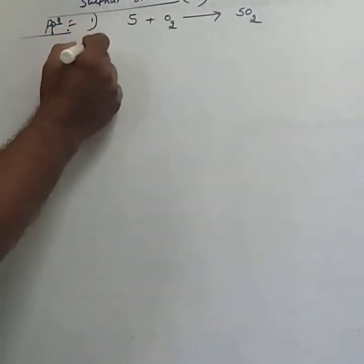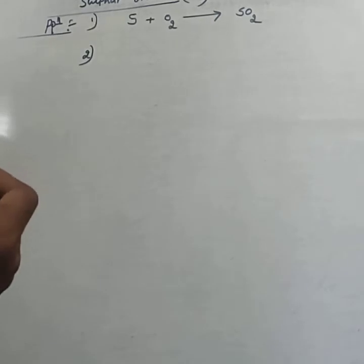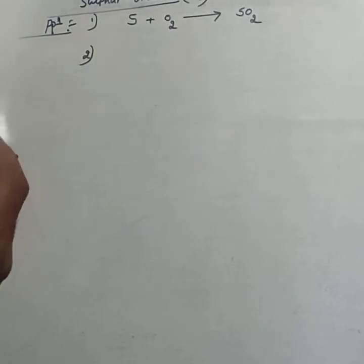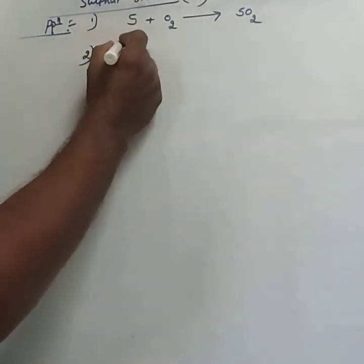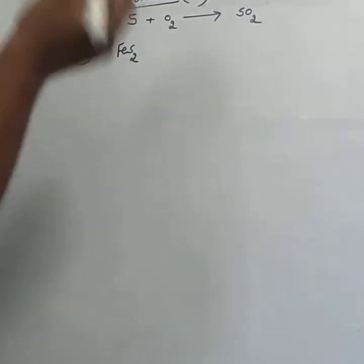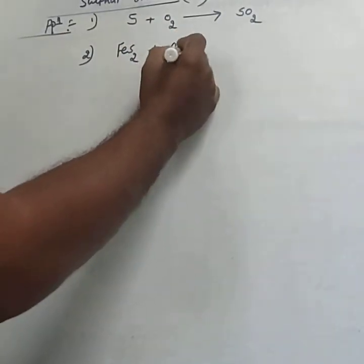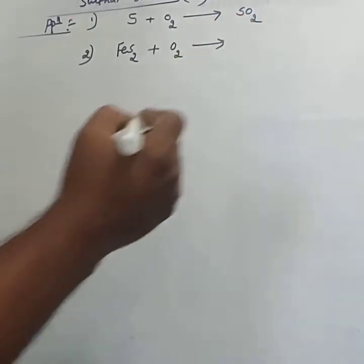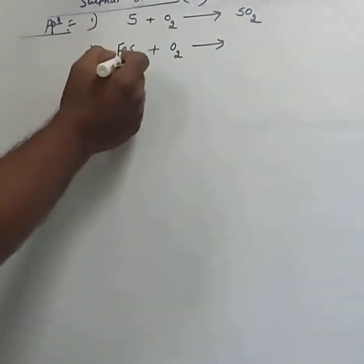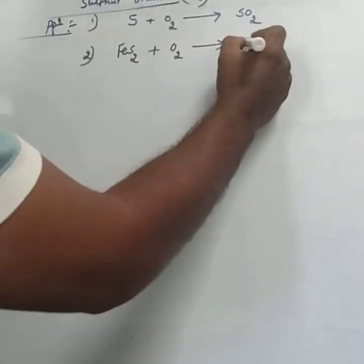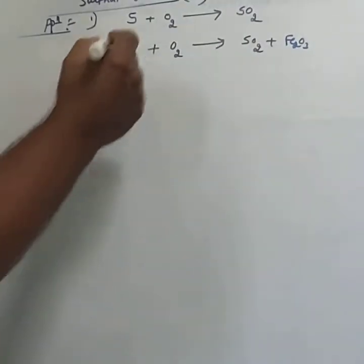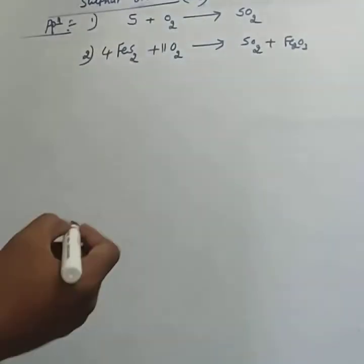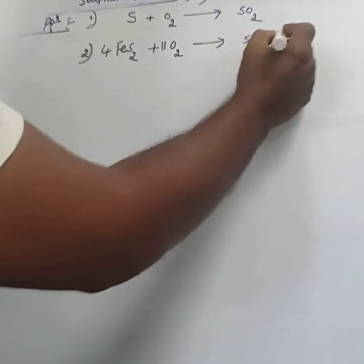The second method is by roasting iron pyrites, that is sulfide ores, in excess of air, we get sulfur dioxide. Iron pyrites formula is FeS₂. By roasting any sulfide ores — as we already discussed in metallurgy — in excess of air, we get sulfur dioxide and Fe₂O₃. To balance this reaction: 4FeS₂ + 11O₂ → 2Fe₂O₃ + 8SO₂.